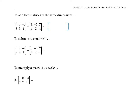So one plus three is four, zero plus negative five is negative five, negative four plus seven is three. And similarly, if we add the corresponding elements in the bottom row, we get six, eleven, two. To subtract two matrices of the same dimensions, we subtract elements. So here we get negative two, five, negative eleven, four, seven, and zero.